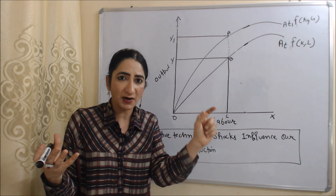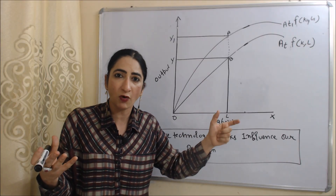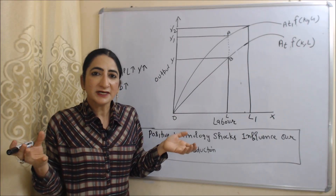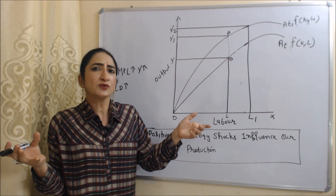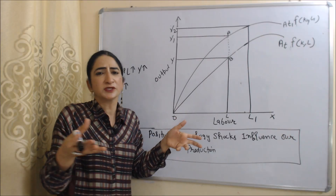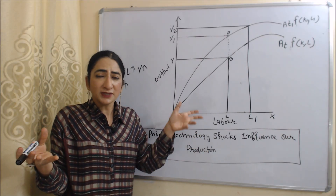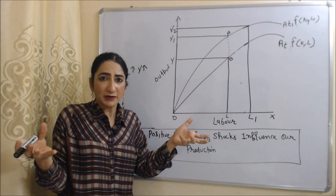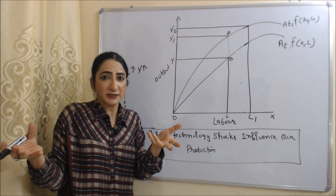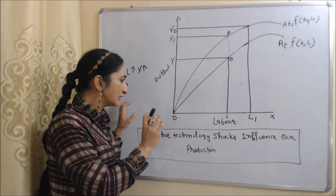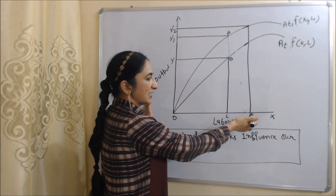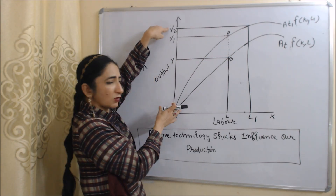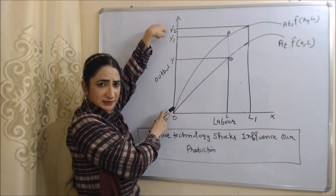We are using the same amount of labor but output increases from OY to OY1. Labor demand will increase in the economy for two reasons: first, we are increasing production so we need more labor; second, during this movement we are increasing output using less labor, meaning marginal productivity of labor is very high. When marginal productivity is high, we increase demand for labor from OL to OL1, and production increases further from OY to OY2.